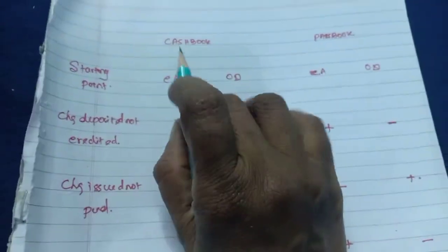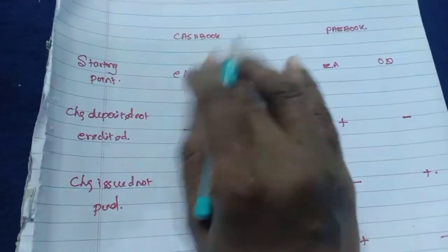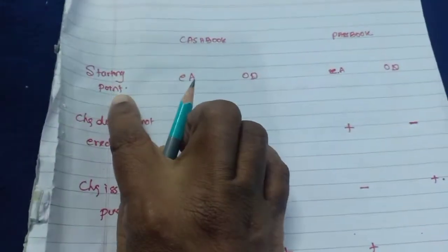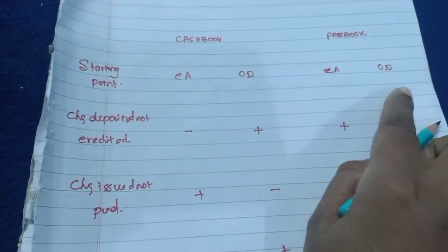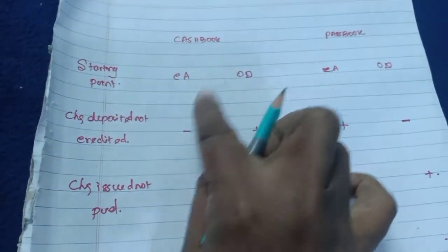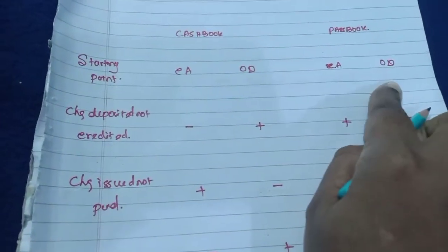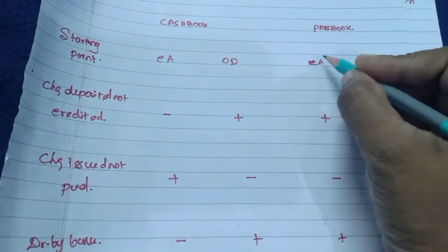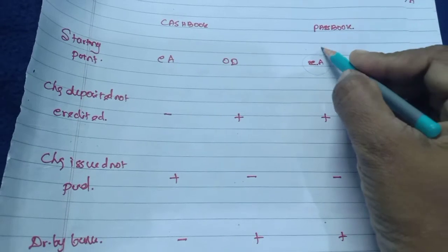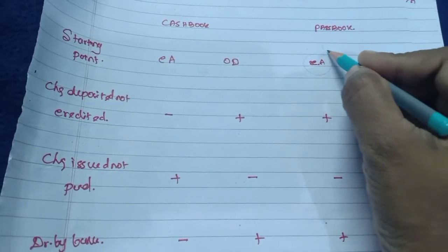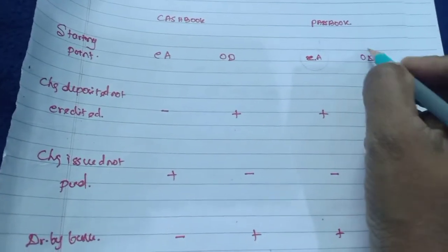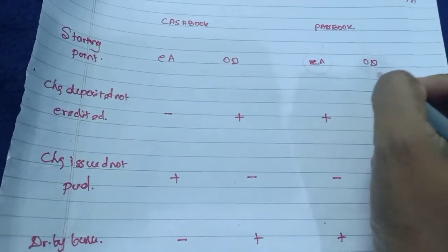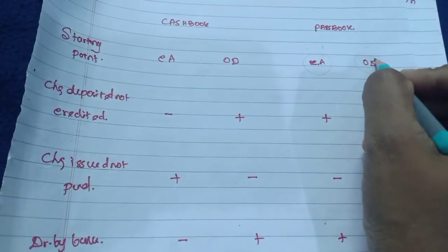Please memorize this formula. The starting points are cashbook and passbook. For current account and OD, both the cashbook and passbook use current account OD as the starting point. In the passbook, the current account and savings balance will always be positive. In the passbook, the OD account will always be in negative.